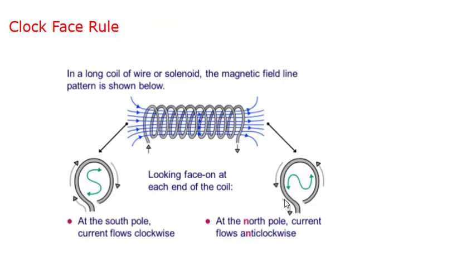Now let us understand the clock face rule. According to the clock face rule, look at one face of the circular wire through which current is passing. If the current around that face flows in the clockwise direction — the same direction as the minute hand of a clock — then that face of the circular wire will be the south pole. This is easy to remember: if you draw the current flowing clockwise it traces an S shape, and S indicates south pole.